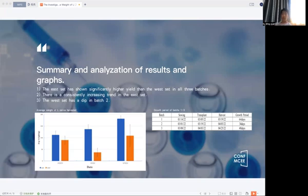Batch 3 has the highest weight in the East set due to a higher temperature compared with batch 1, which ranged from 22 to 25 degrees, and a longer growth period compared to batch 2, which is 48 days versus 34 days. In batch 3, the relatively high temperature compared to batch 1 and receiving a larger amount of time caused it to have the highest weight yielded in the three batches of the East set.